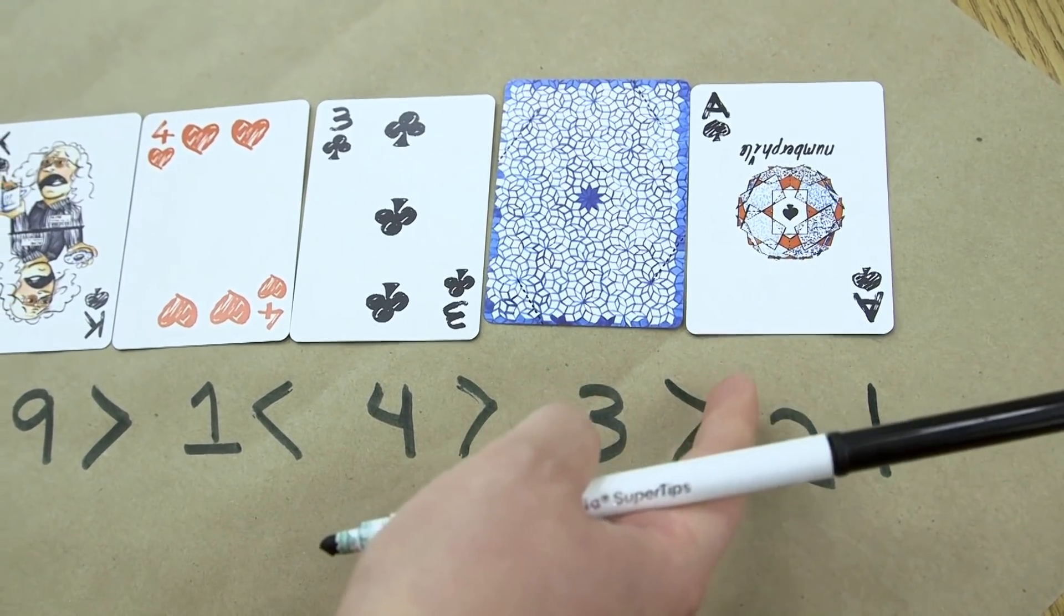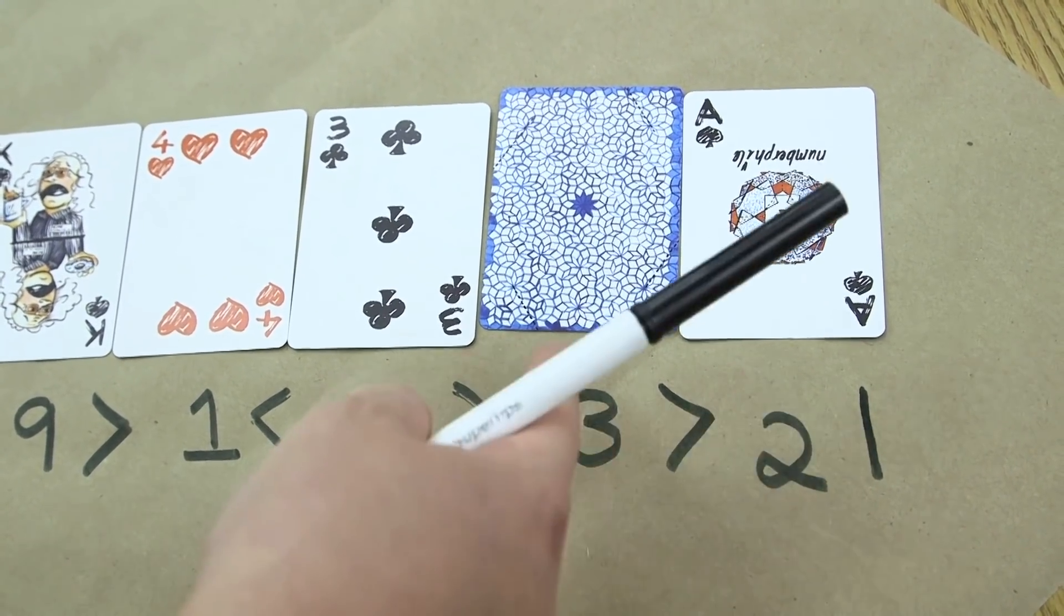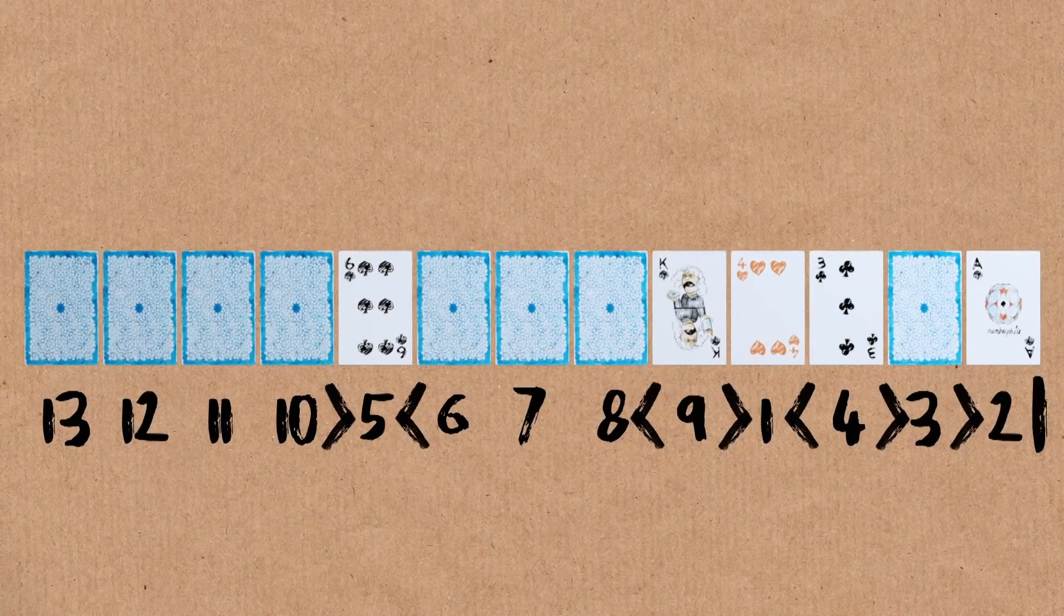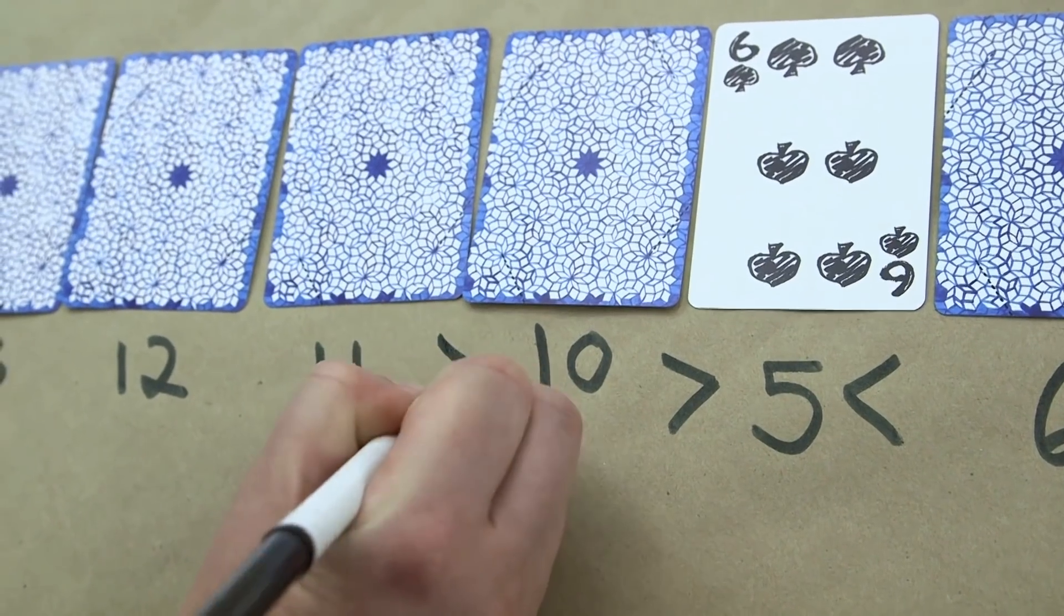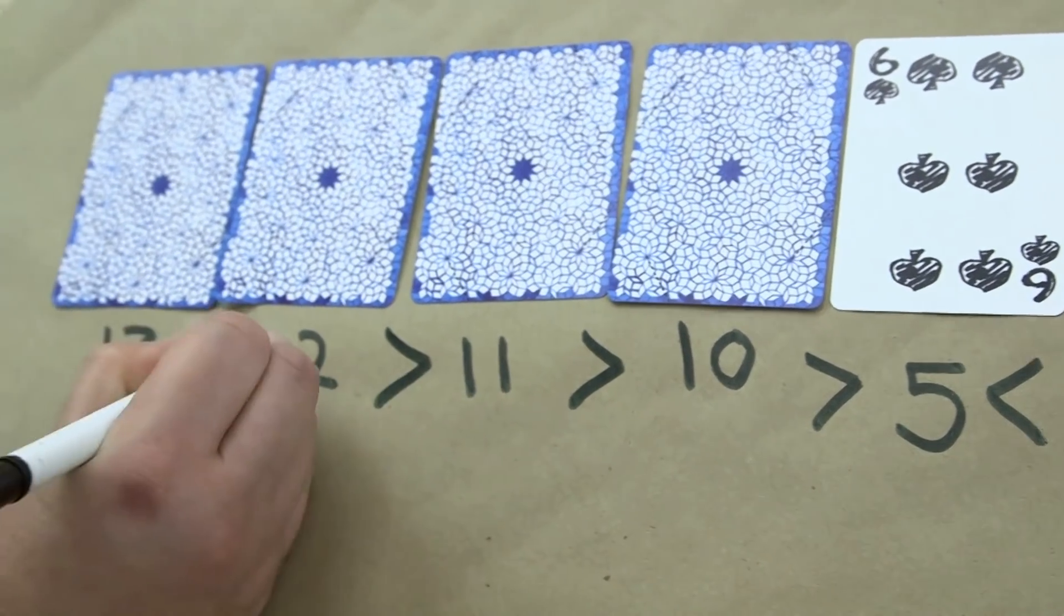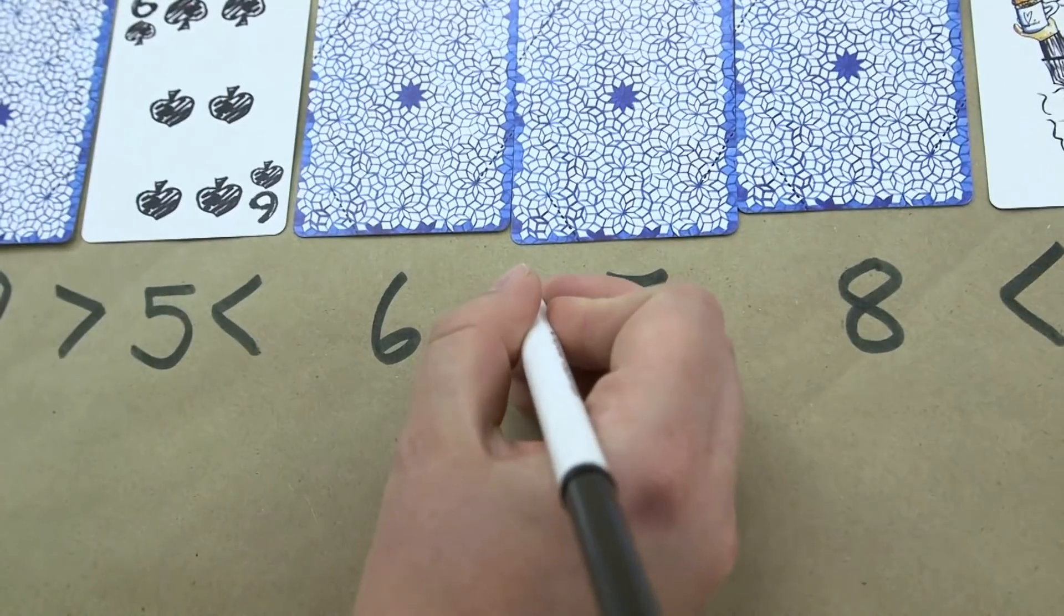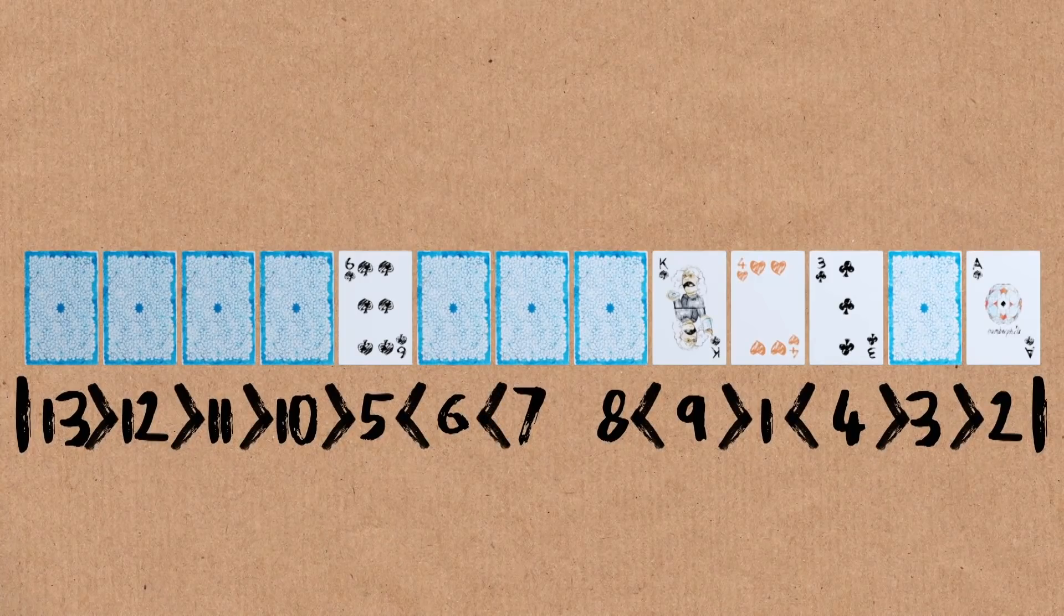So this card, because it's face-up, it absolutely has to be drawn out before its neighbor. If this card were drawn out first, this would be stuck forever. Now on this side, 10 is less than 11, which is less than 12, which is less than 13. Right here in the center, six is less than seven, which is less than eight.